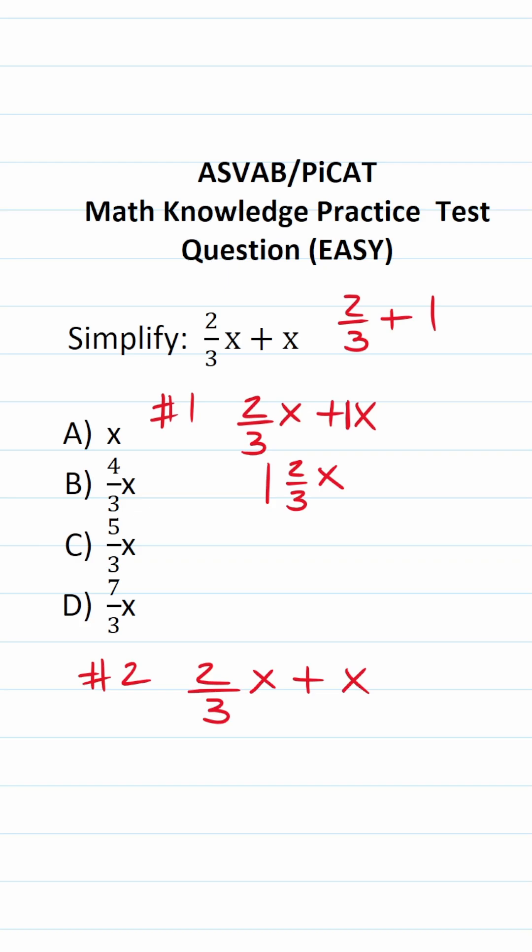So the next thing we have to do is convert the mixed number one and two-thirds to be an improper fraction. To do that, we do one times three, which is three, plus two, which is going to be five. So this is going to be five over three x, and the answer is C.